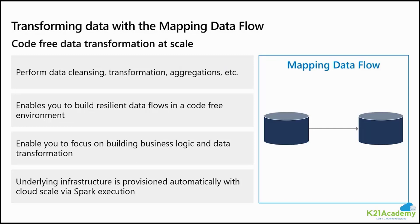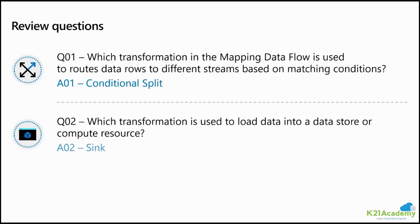A lot of professionals using Azure Data Factory do not have expertise in Python or other transformation languages such as Scala. Keeping that in mind, Microsoft created mapping data flow. Mapping data flow is code-free — you don't have to code but you can still apply transformation logic using a GUI with drag and drop. In the lab, we will use mapping data flow to pull data from an HTTP location, transform it, and write into Azure Synapse Analytics. Which transformation in mapping data flow is used to route data rows to different streams based on a matching condition? That's called conditional split. How do we load data into a data store? We use a sink to write the data.